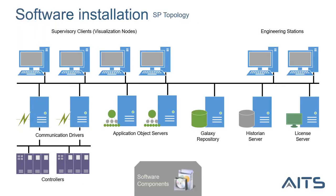After planning your application — not the objects or graphics, assuming those are already done — once you plan your objects and templates, you have a good idea of how big your system is. Generally you have this topology: the application object server hosts your objects, communication drivers, galaxy repository, historian server, etc. This can be big or small depending on your application. One of the biggest projects I've seen had 75 different application object servers. However, we always recommend keeping the galaxy repository and historian server on two separate servers, away from the runtime.